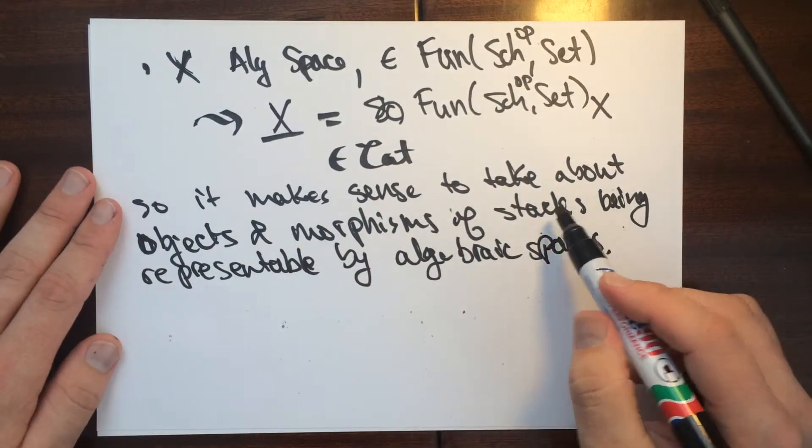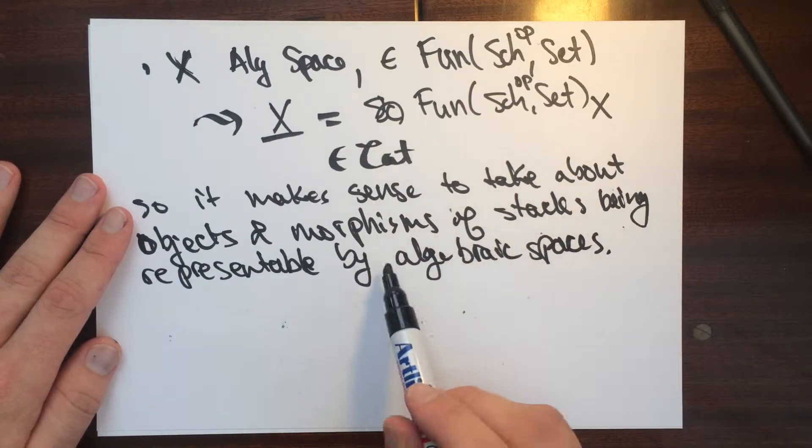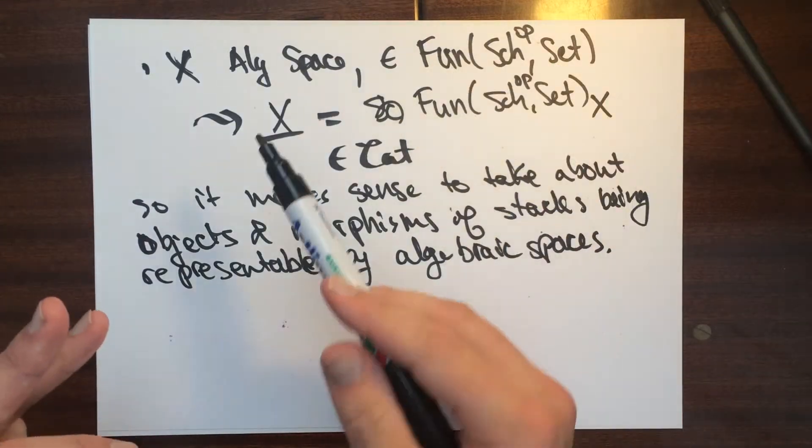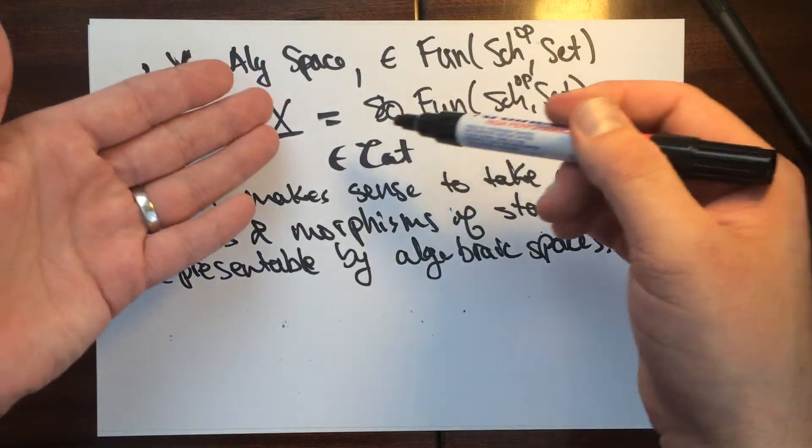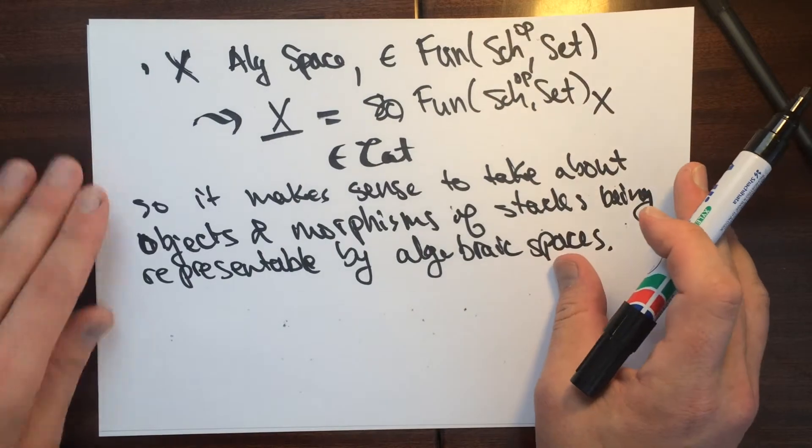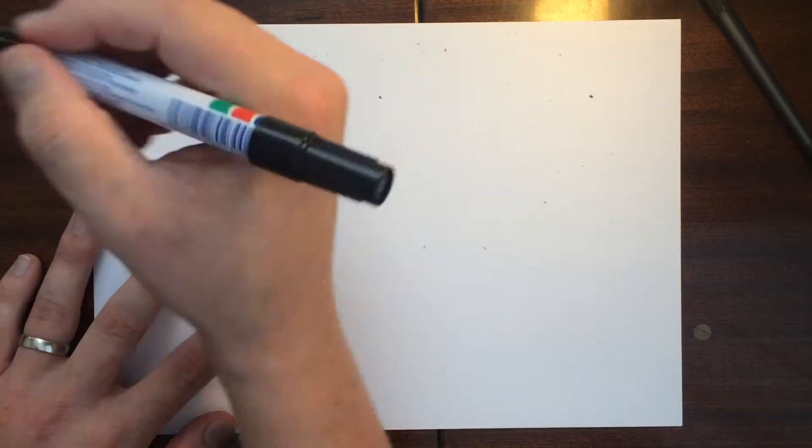So it makes sense to talk about objects and morphisms of stacks being representable by algebraic spaces. And so stacks, again, we should just be thinking of categories since I haven't given the definition, and algebraic spaces, we should be thinking of functors. So if you have an algebraic space, this is really going to be a functor, and you can make a category out of the functor as well.